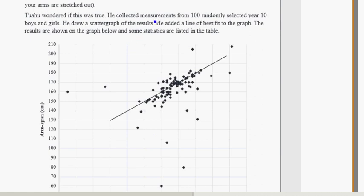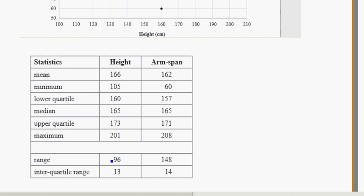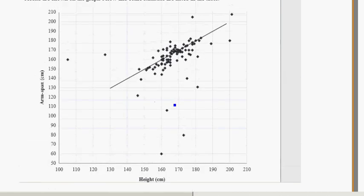As an examination, 100 measurements were collected of year 10 boys and girls, and the results were drawn up here. We see the line of best fit and all the different points. The statistics were also collected - the mean, median, range, all that kind of stuff for the height and the arm span. And we have some questions to answer.